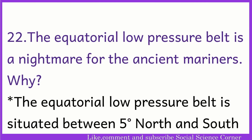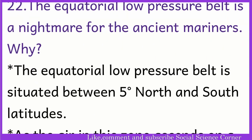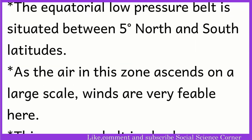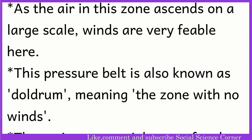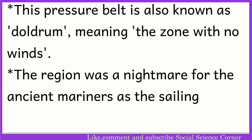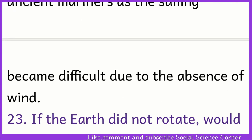Why was the equatorial low pressure belt a nightmare for ancient mariners? The equatorial low pressure belt is situated between 5° north and south latitudes. As the air in this zone ascends on a large scale, winds are very feeble here. This pressure belt is also known as the Doldrums, meaning the zone with no wind. The region was a nightmare for ancient mariners as sailing became difficult due to the absence of wind.